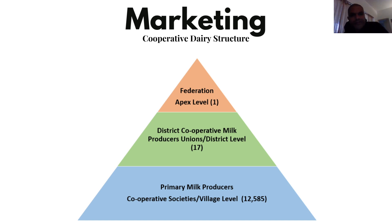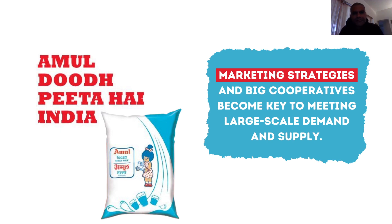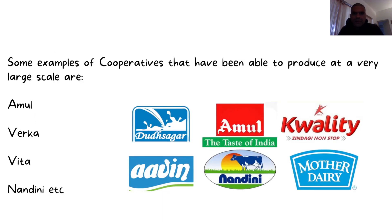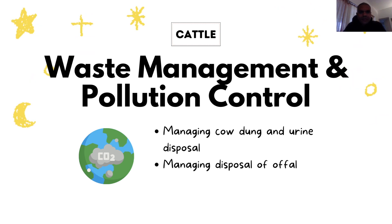We all know of Amul, which is India's biggest and most successful cooperative based in Gujarat. It collects milk from millions of producers and brings it to our doorstep in various forms. There are many others like Verka and Vita based in Punjab, and in Himachal we have Kamdenu - all basically doing that same work.